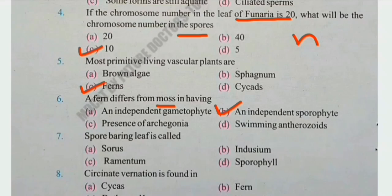Number 7: Spore-bearing leaf is called — sorus, endosium, remnantum, or sporophyll? The right answer is D, sporophyll.